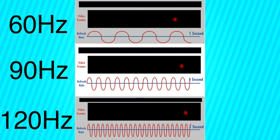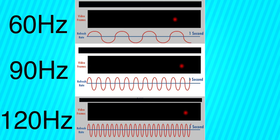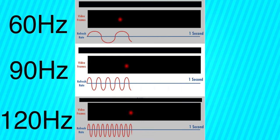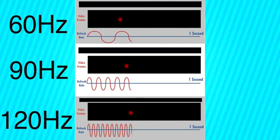So what is Hz? It's very simple. A normal smartphone has a 60Hz display. Then there is 90Hz and 120Hz. So basically, we have high refresh rate displays at these different levels.